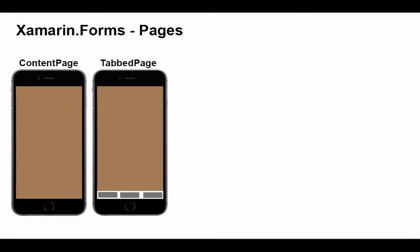There's also a tabbed page. The tabbed page presents a tab bar with a certain number of tabs that we can specify, and allows the user to navigate between a stack of pages using those tabs. The tab bar is at the top in an Android device and at the bottom on an iOS device.